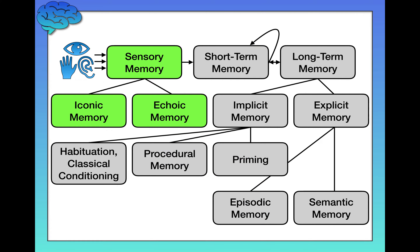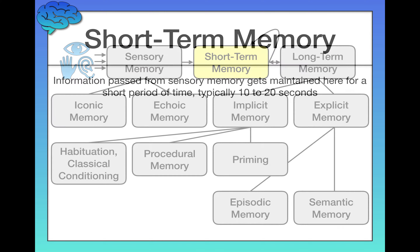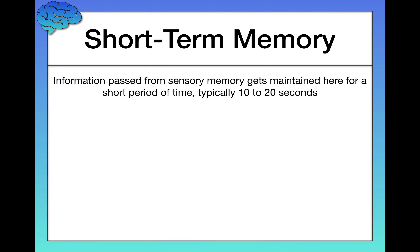That's sensory memory. Now onto short-term memory, where we debunk some common misconceptions. Short-term memory is a maintenance memory system containing information from your sensory memory, maintained for typically between 10 and 20 seconds. A lot of people use the words 'short-term memory' to refer to what they ate for breakfast or what they did last night — but that's all long-term memory. In fact, if you remember anything from the beginning of this video, that information is already in your long-term memory. Short-term memory really is short-term — just 10 to 20 seconds.